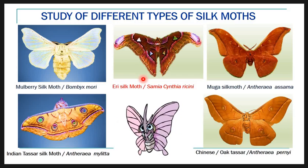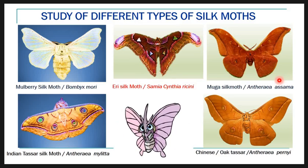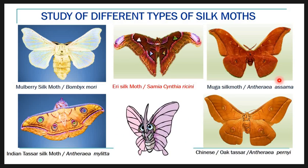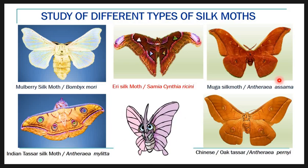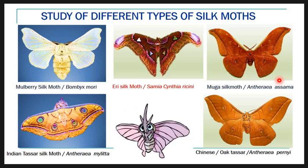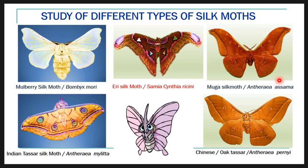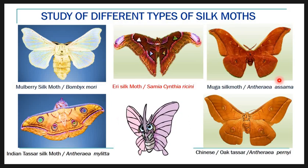The silk produced by the Eri silkworm is white and brick red in color. The next is Antheraea asama, commonly called the Muga silk moth. The Muga silk moth is yellowish to brown in color. Its larvae are polyphagous, feeding on soma and solu plants. It is semi-domesticated, meaning it is also found in the wild. In India, the Muga silkworm is commonly reared in Assam, and the silk produced is golden yellow in color.